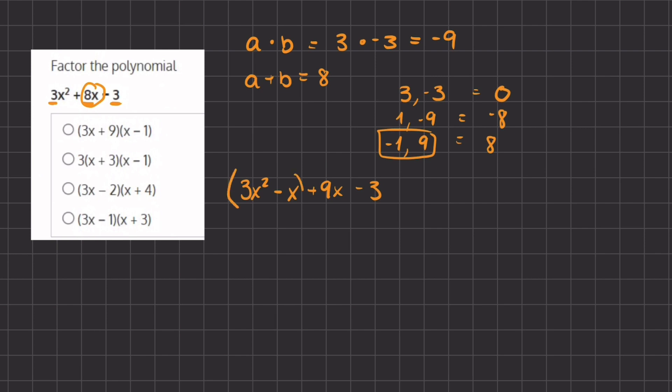In the first two terms, 3x² - x, we can take out an x and we are left with 3x - 1. In our second two terms we can take out a positive 3, and so we are left with 3x - 1 again.